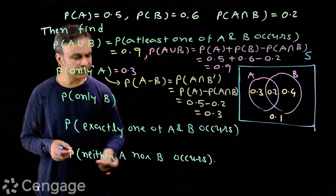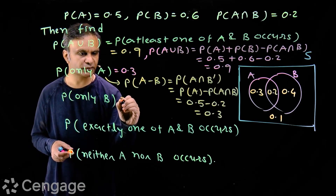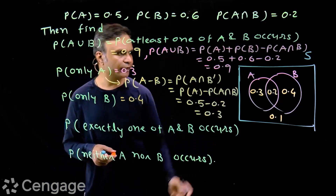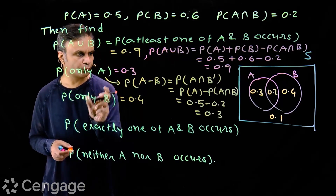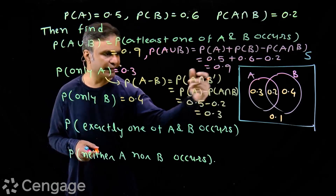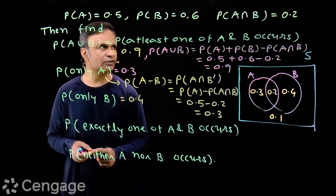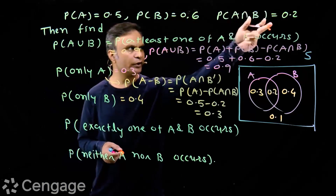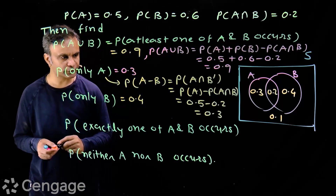Similarly, we find the probability of only B, which equals 0.4 from the Venn diagram. Using the formula: P(only B) = P(B) − P(A∩B) = 0.6 − 0.2 = 0.4.